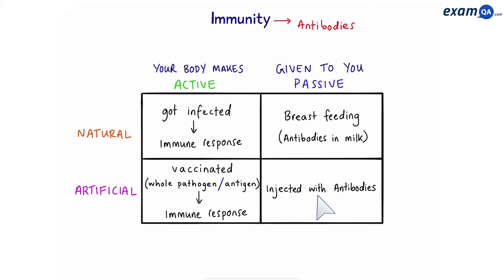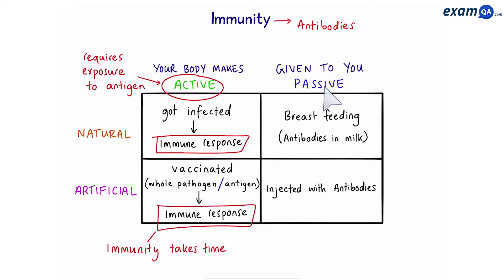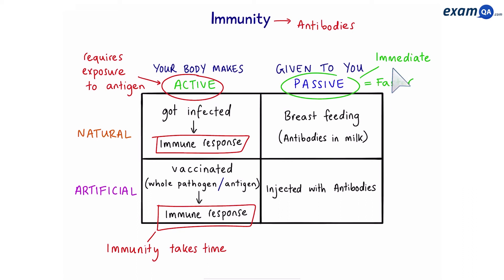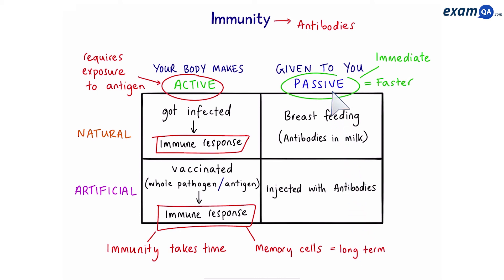Some final differences between active and passive immunity: active immunity requires exposure to the antigen, whereas passive immunity does not. Active immunity involves the immune response, meaning the person's body has to produce the antibodies, so it will take time for immunity to develop. Passive immunity is much faster because the antibodies are given to the person straight away — passive equals immediate immunity. Although active immunity takes a long time, it will eventually produce memory cells that stay in the body for a long time, so active immunity lasts for a long time. In passive immunity, since it does not involve the production of memory cells, once the antibodies are used up they are gone, meaning it only lasts for the short term.